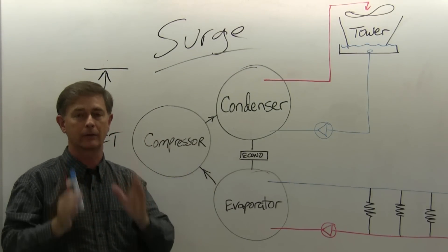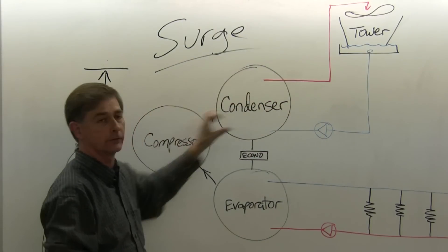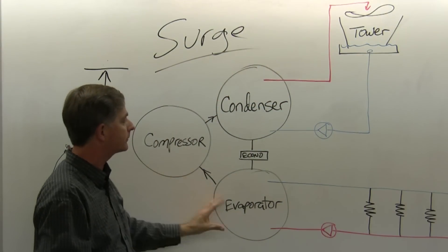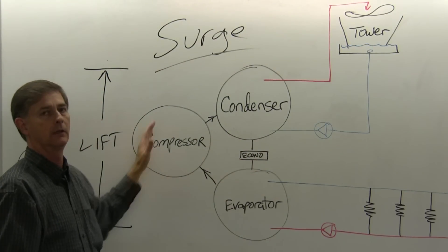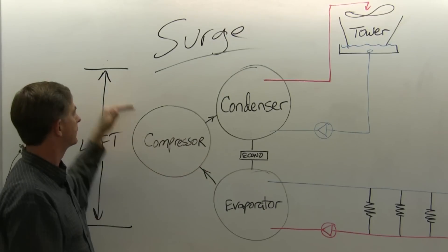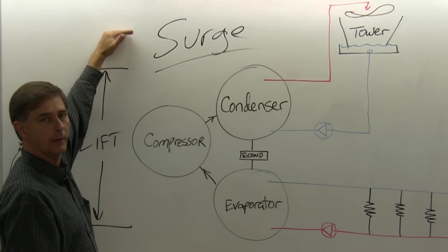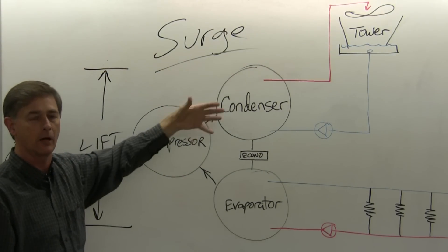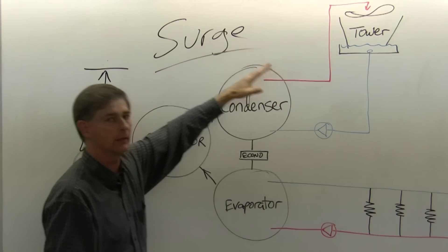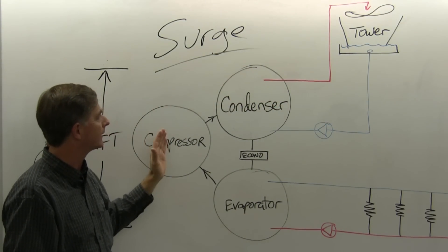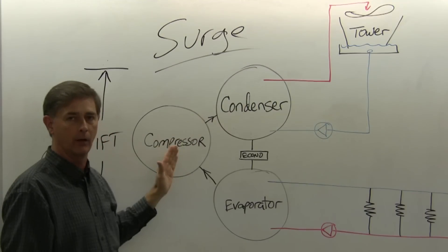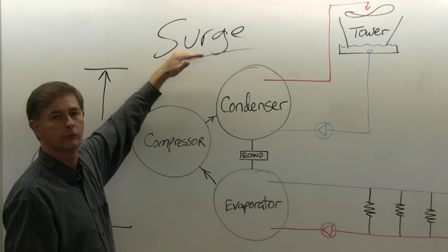Now that condition, that backward flow is a temporary flow, because as it does that, the differential pressure comes in line, and so now it's pumping again. Until it starts to build that pressure differential where it cannot pump against, and you have a backward flow again. That backward flow is called surge.